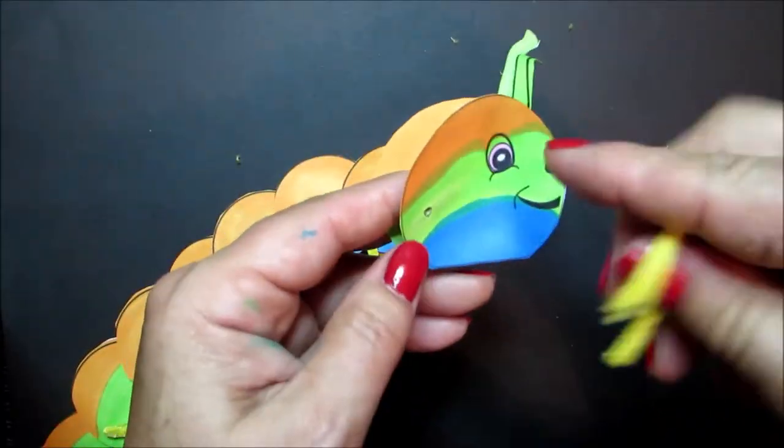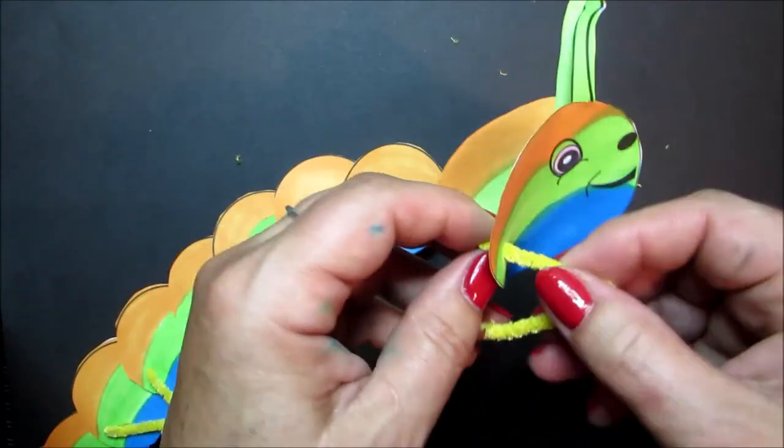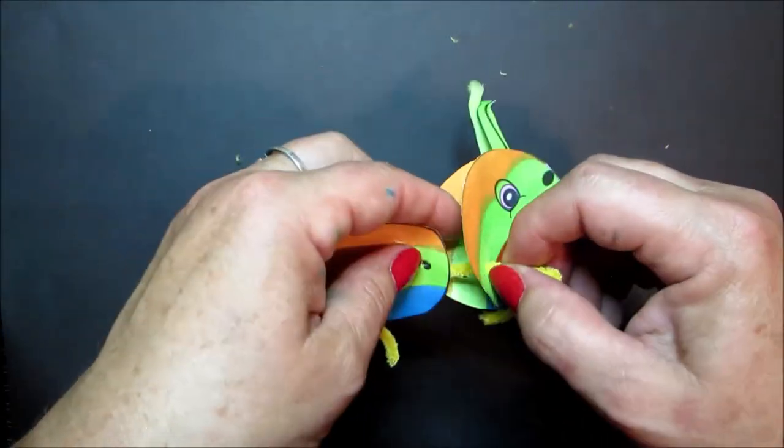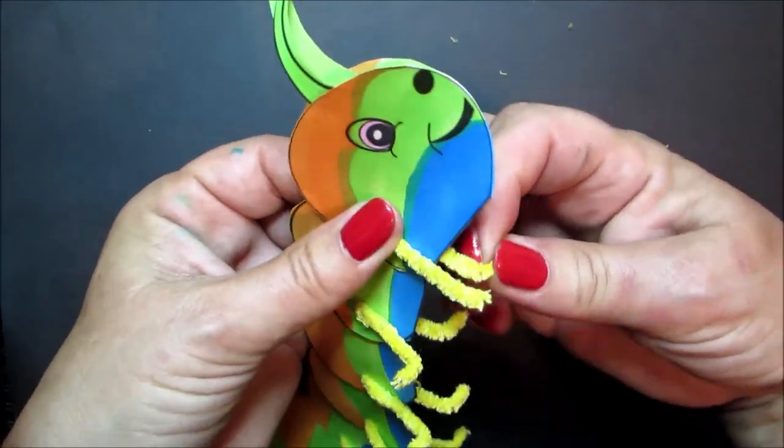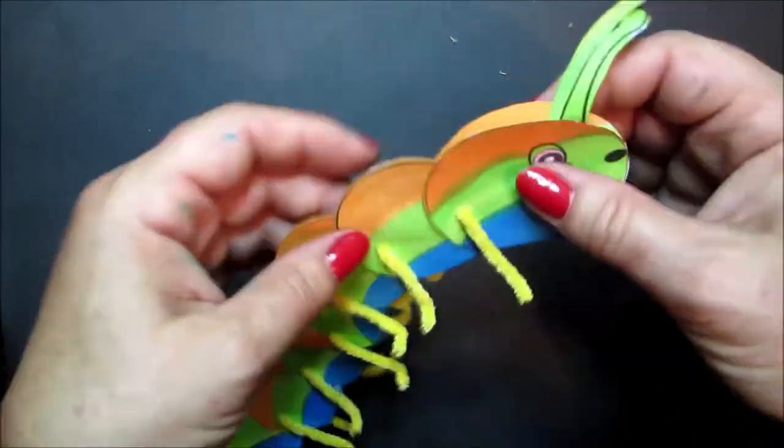And then when you get to the head, be careful because you've glued the antennae in place. Same again through the front side. And then through the back side and bend his feet.